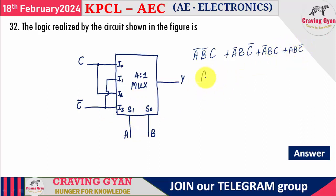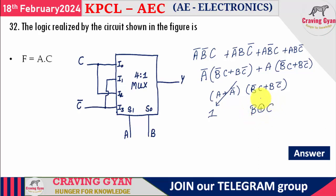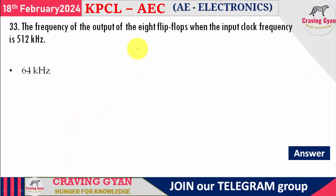32nd question: for a 4:1 multiplexer with select lines A and B and inputs I0=C, I1=C̄, I2=C, I3=AC̄. Grouping the output expression: Ā(B̄C + BC̄) + A(B̄C + BC̄) = (A + Ā)(B̄C + BC̄) = B̄C + BC̄ = B XOR C. Option 4, B XOR C, is the answer.